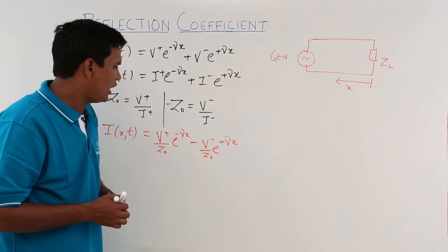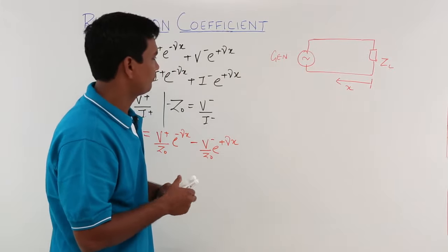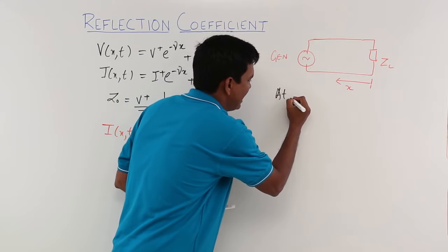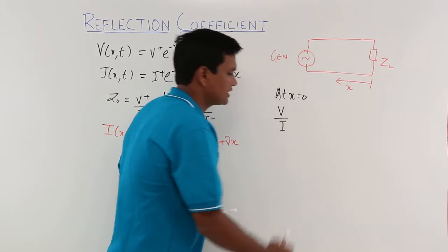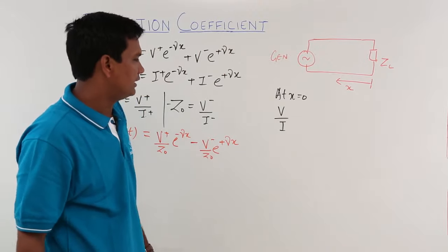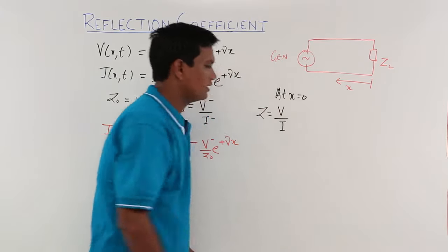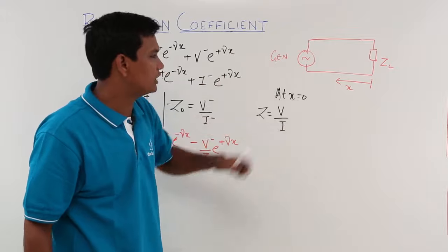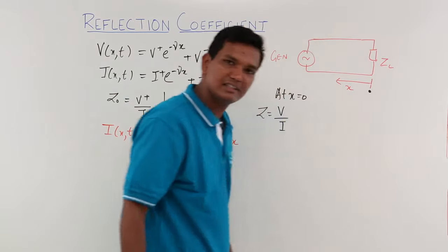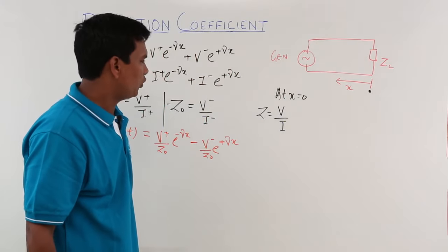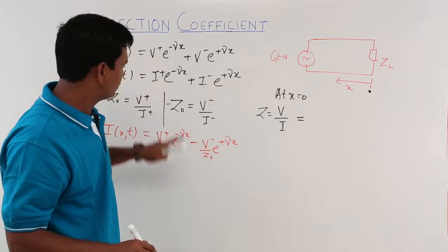What I want to find is the ratio of voltage to current at x = 0. Voltage divided by current is impedance, so let us call it Z. I want to find the voltage divided by current at x = 0. The point x = 0 is located here on the transmission line.